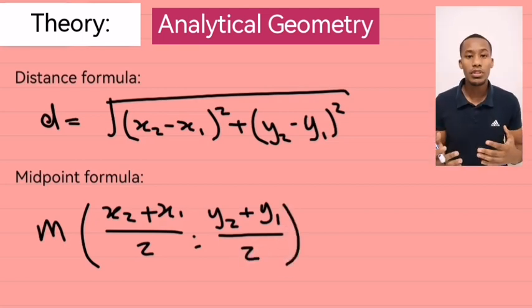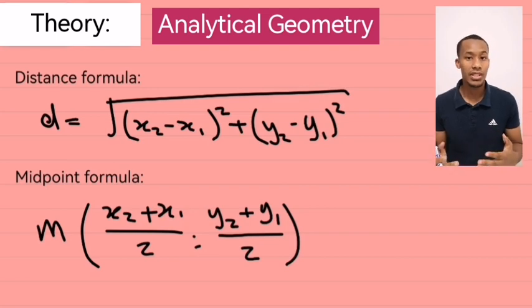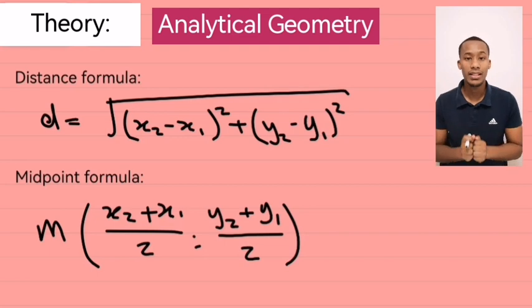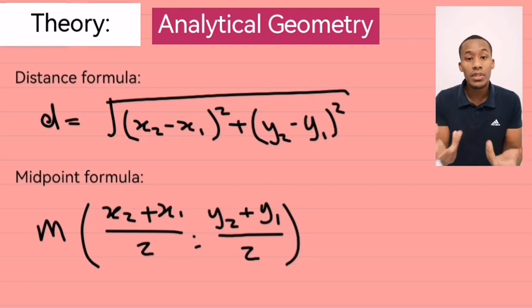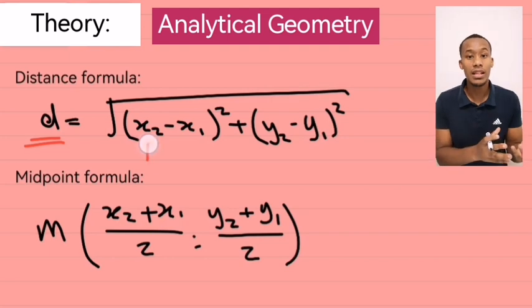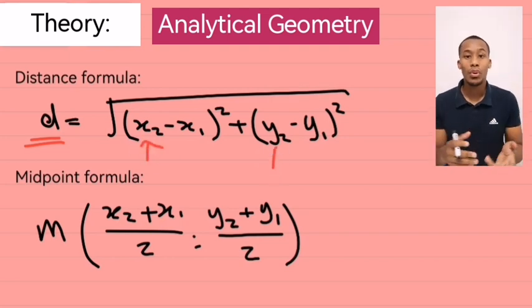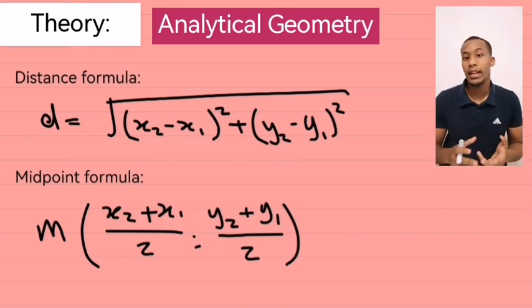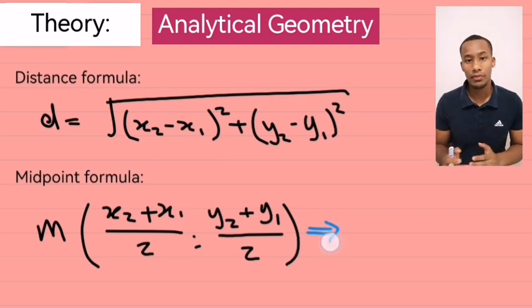Now, it's also important to note that these questions can be asked differently. Sometimes they give you the coordinates and you'd have to find the gradient, the distance, or the midpoint. And other times, they might give you those three things and you need to find the coordinates. So, for example, I could give you the distance and ask you to work out the x or y coordinate. Or I could give you the midpoint and again ask you to work out those. And for that, you would use the following formula.